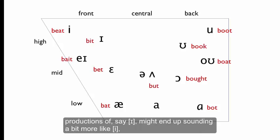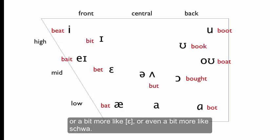There's some degree of relativity to vowel productions, and you'll find that some productions of, say, I might end up sounding a little bit more like E, or a bit more like EH, or even a bit more like schwa.